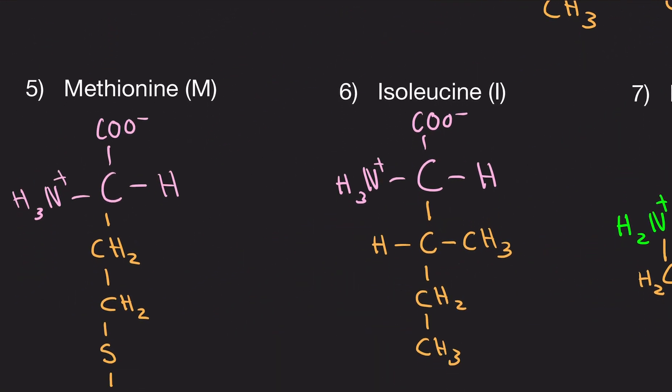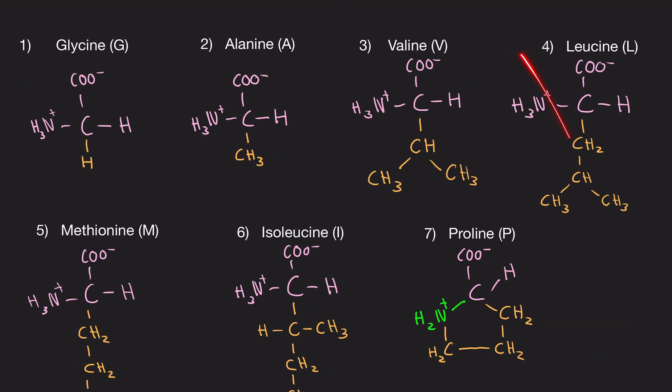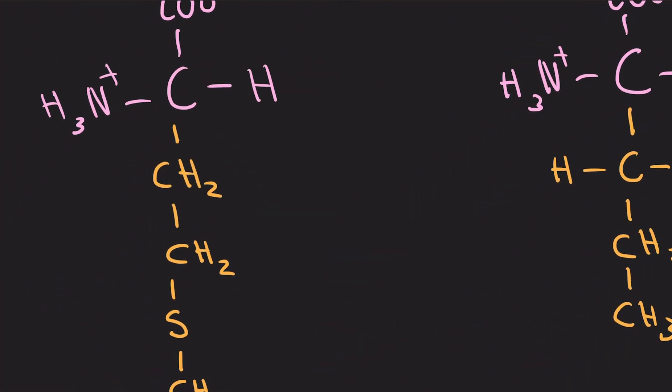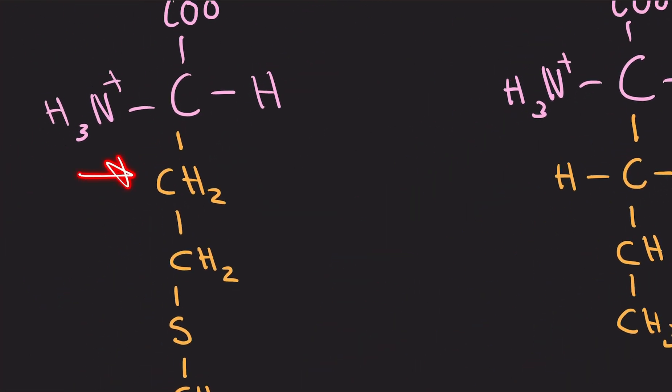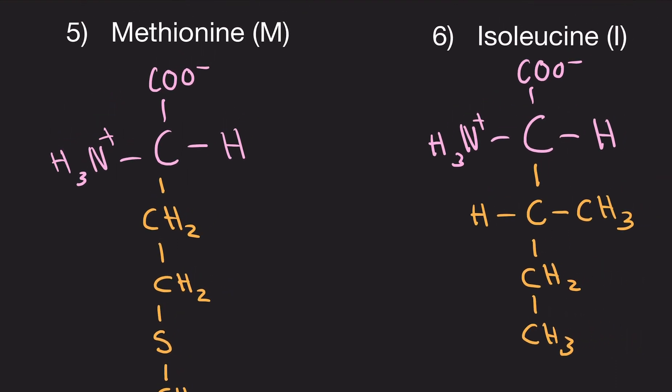Now here's where we get a little bit interesting here. We have methionine. Methionine is very unique in that it has a CH2, a CH2. So we're basically scrapping all this and now we're starting all from scratch. So you have a CH2, a CH2. Now we have a random sulfur here. Methionine just wants to be special. It just wants to make everyone's life more difficult.